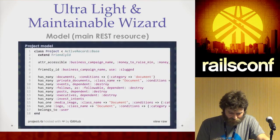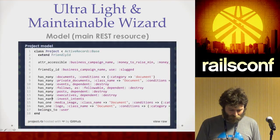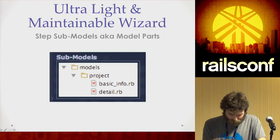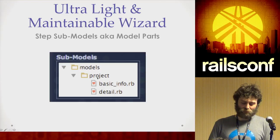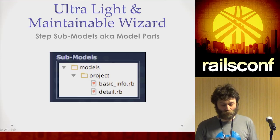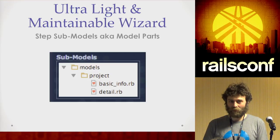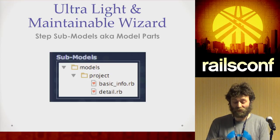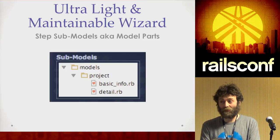Here's the project model — it's got the basic definition of that model and associations. What I end up doing is creating a presenter per wizard step, nested under a directory that matches that model name — 'project', for example. In this case, only step one and two had customizations over that model. Step three did not have validations of its own, so I didn't even have to create a file for it. Step four didn't have anything either.